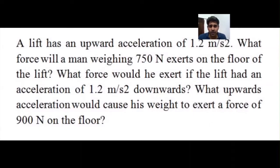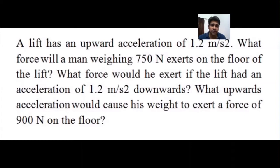A lift has an upward acceleration of 1.2 m/s². What force will a man weighing 750 N exert on the floor of the lift? That is part one. Part two: the lift is moving downward with the same acceleration — what is the reaction? Part three: calculate the acceleration such that the weight exerted on the floor will be 900 N. It's not the man's actual weight increasing but the force experienced by the floor due to the motion.